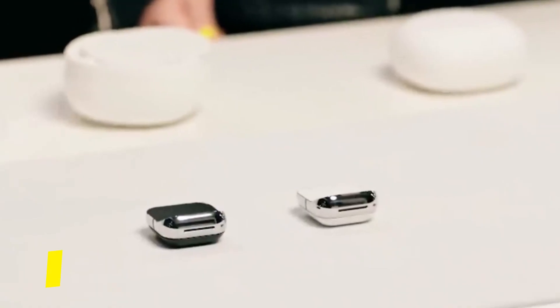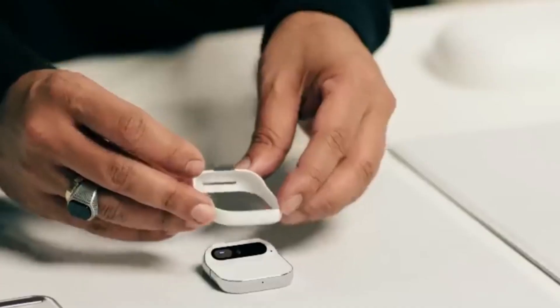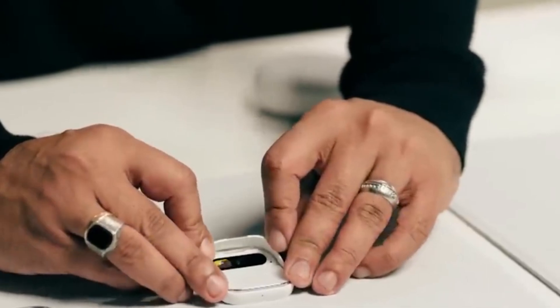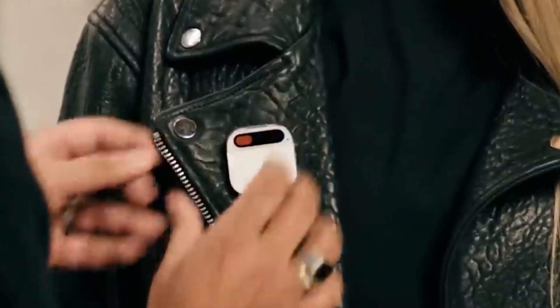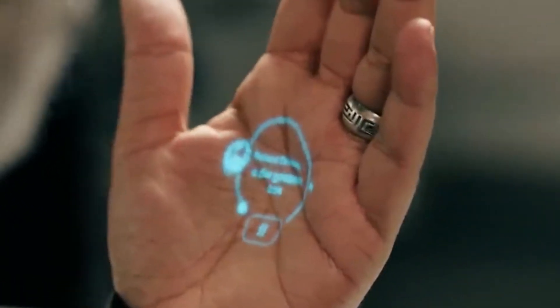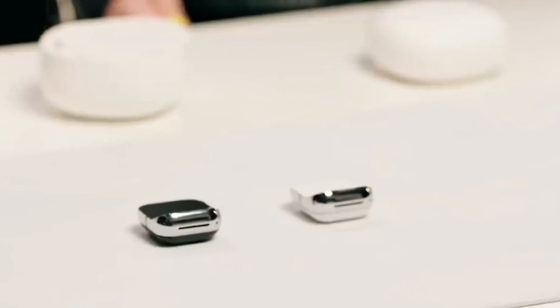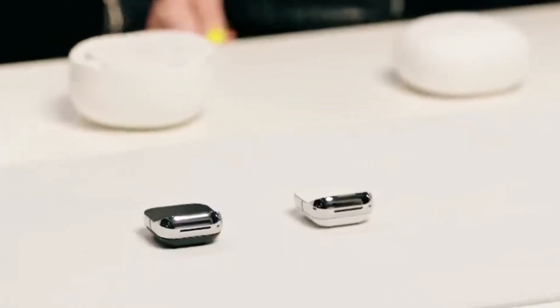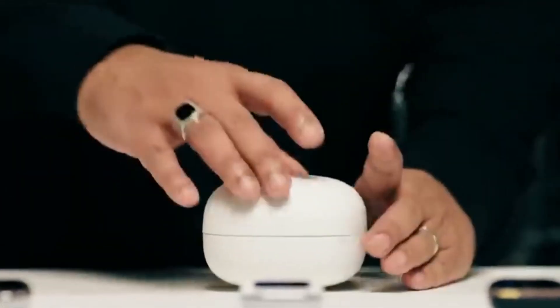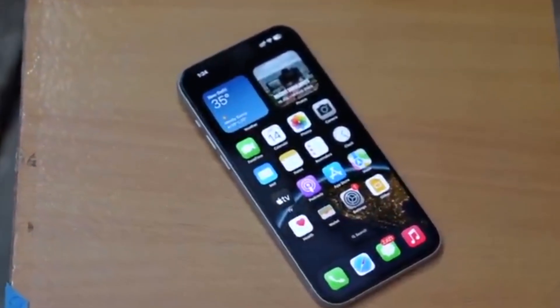Will humane AI pin replace smartphones? Some people think it can replace smartphones, but here we will explain what this AI pin needs to do a lot more to replace smartphones. Humane's upcoming AI wearable, priced at $699, the AI pin endeavors to supplant smartphones and their myriad apps, opting for a voice-controlled AI assistant and a groundbreaking laser-projected display in lieu of a traditional screen. The device, magnetically attachable through clothing, boasts features such as a wide-angle camera, a clickable touchpad, and an indicator light signaling recording activity.